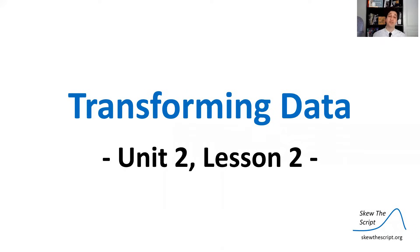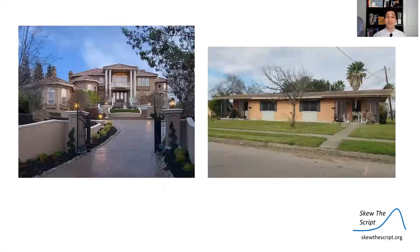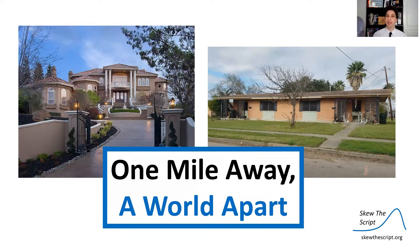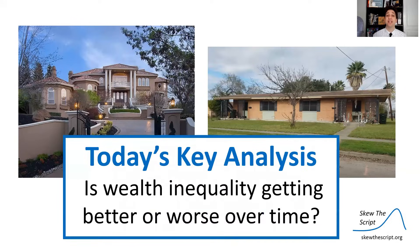Today's lesson is about transforming data. This is Unit 2, Lesson 2 in our sequence. Today we're really going to be focusing on inequality in wealth, specifically in cities across the United States. You'll see there is great wealth in certain pockets of town and great poverty in other pockets very close to each other. Is wealth inequality increasing or decreasing? Is society becoming more equal or less equal over time? And what might be causing those inequalities? Our specific analysis today is: is wealth inequality getting better or worse over time? We're going to use our statistical analysis tools from this lesson to analyze that question.